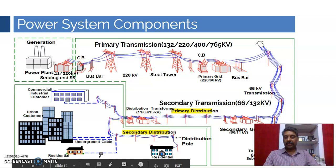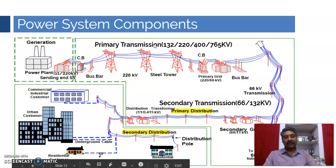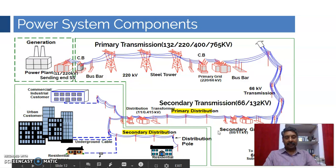This is the structure of the entire process. Starting from generation at 11 kV, it is stepped up to 220 kV and then transmitted at various voltage levels, and then again stepped down. This entire process is done to reduce losses and to avoid excessive voltage drop across the transmission and distribution lines.